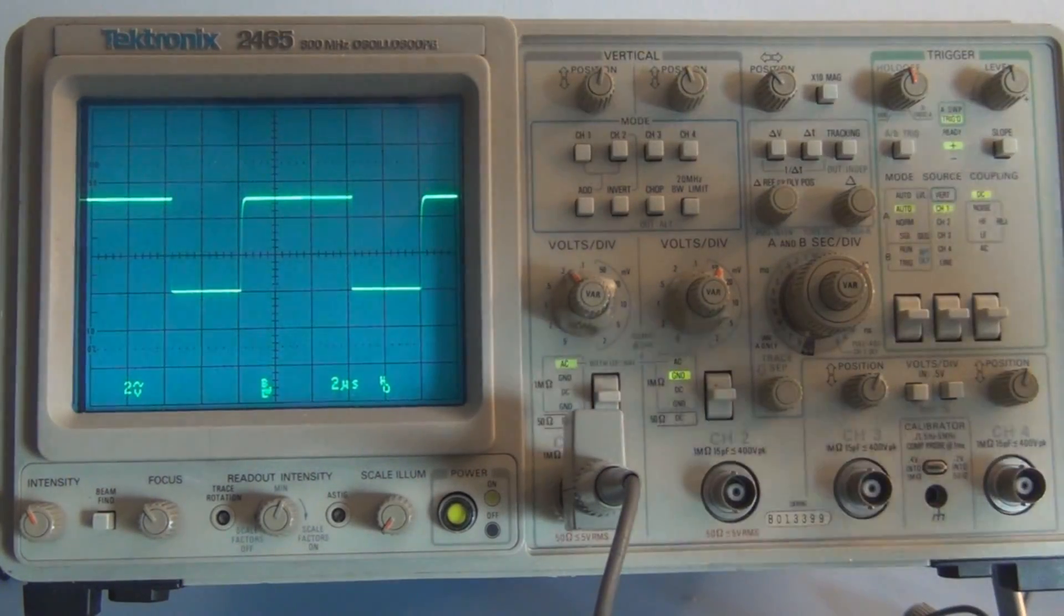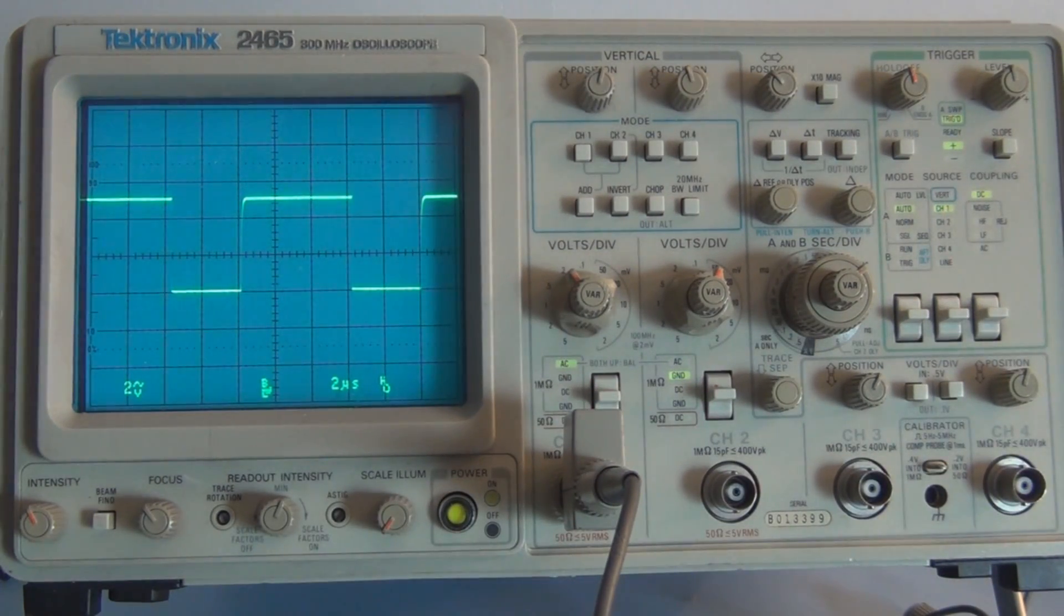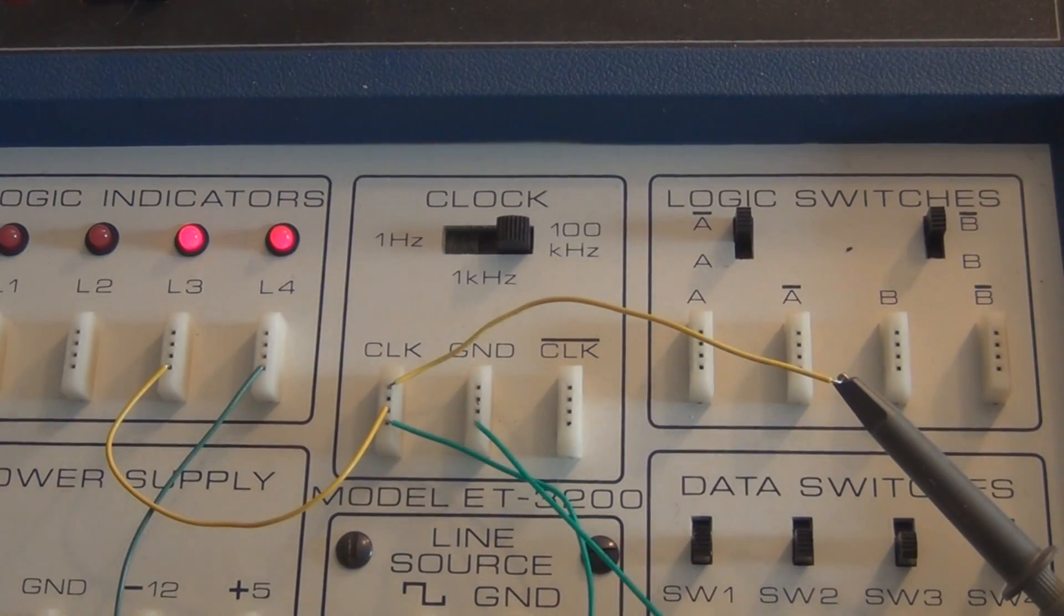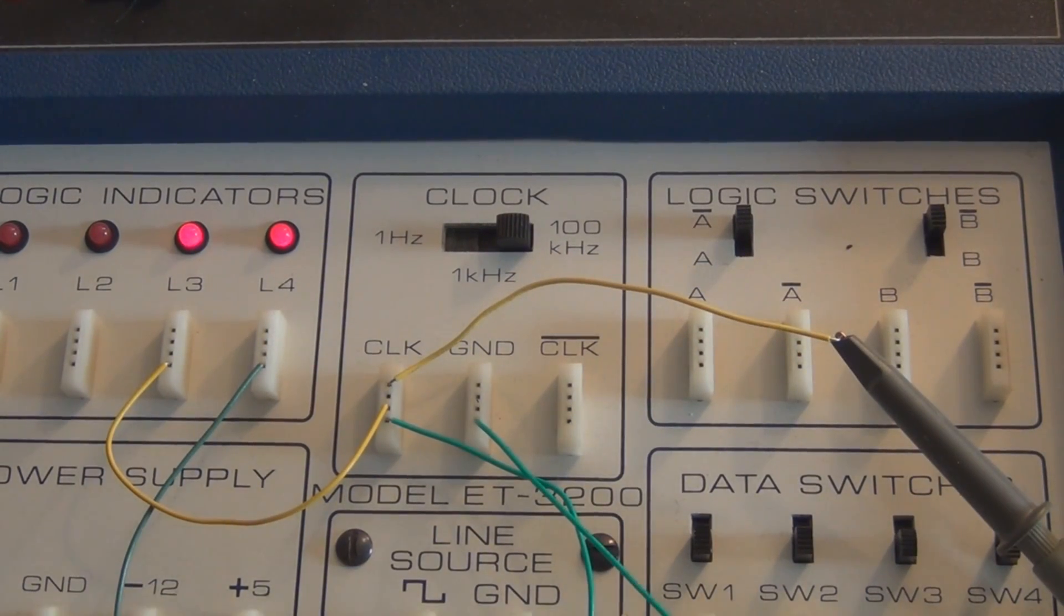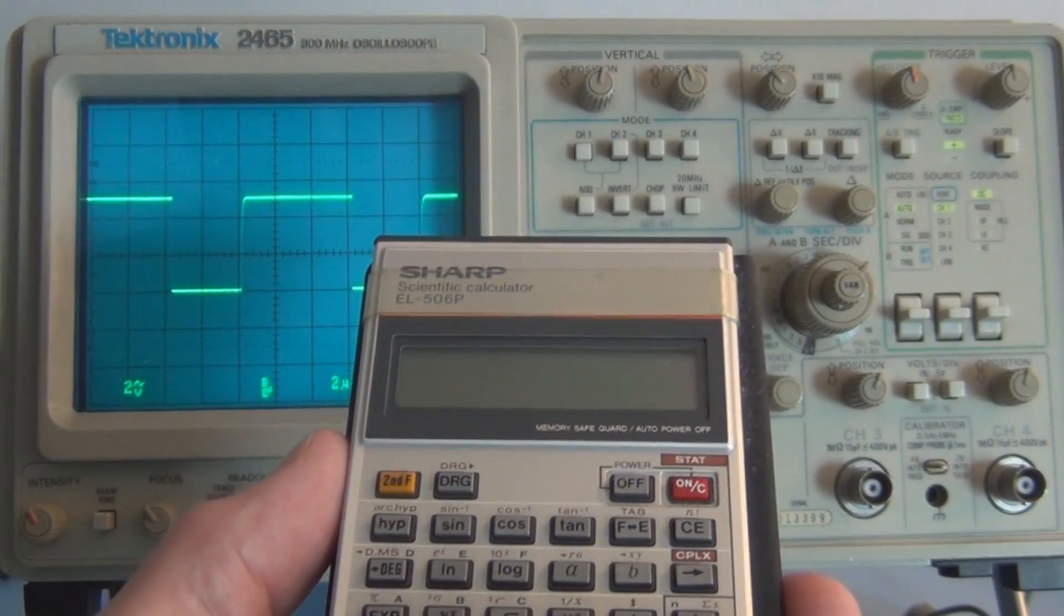I do not have a function generator, but I do have a clock on the Heathkit digital trainer, and here's the clock pulse I have it hooked up to on my Heathkit trainer. And if we look here,